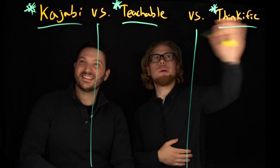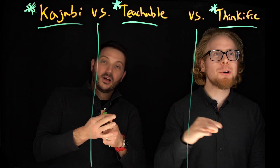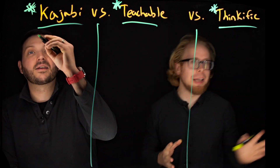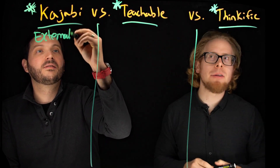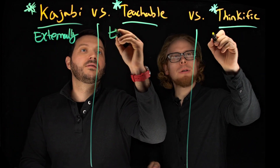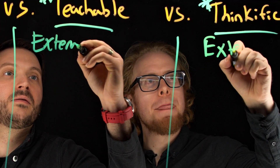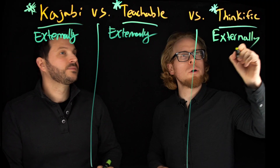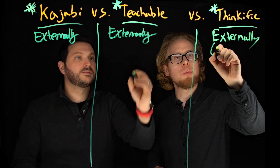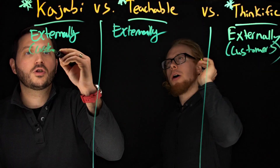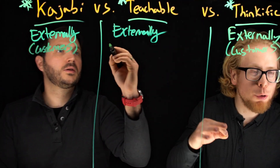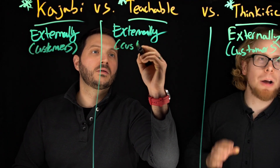All three of these are externally facing LMSs. So if you're building an e-learning program for your employees, don't use these unless you plan on selling the program as well. These are all externally facing, which means that these are for your customers — all three are best for selling your course to your customers.